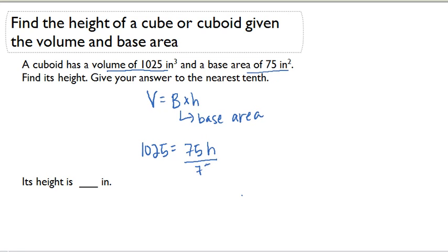So to solve for H, we could just divide both sides by 75. When we do this, we get H equals approximately 13.667. This is, if you're thinking about fractions, 13 and two-thirds.